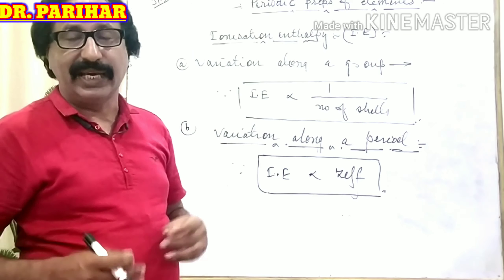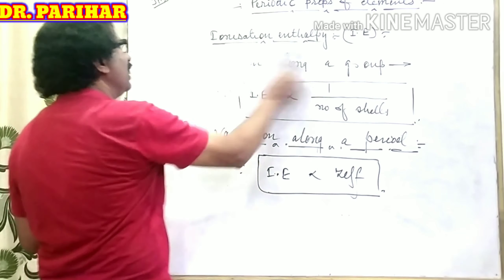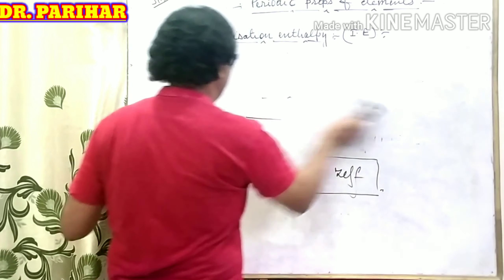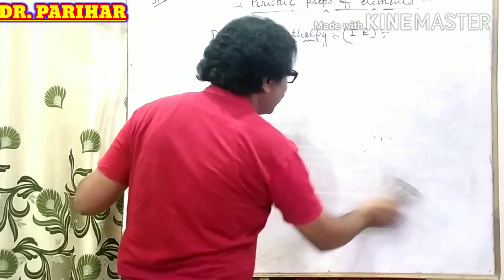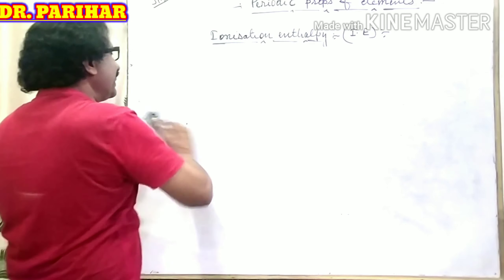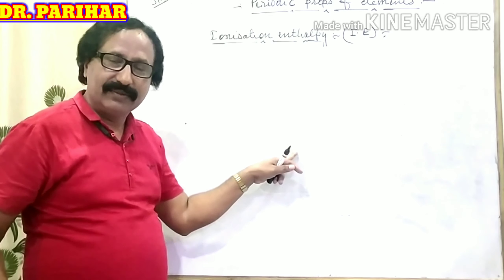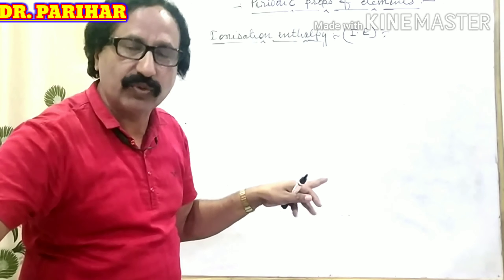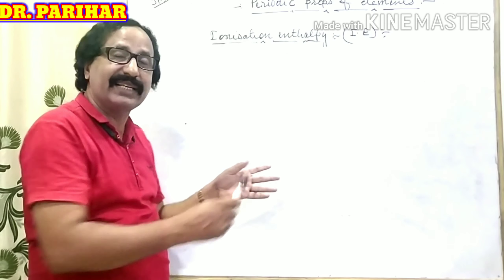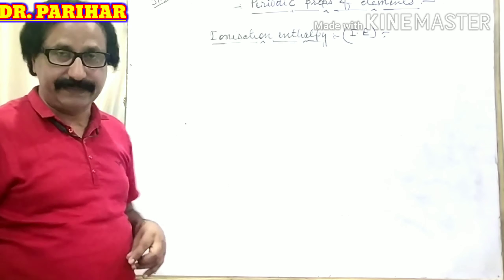There is one very interesting question — an exception. Chemistry is the subject of exceptions. One exceptional question related to the variation of ionization enthalpy along a period: I will discuss the second period elements.